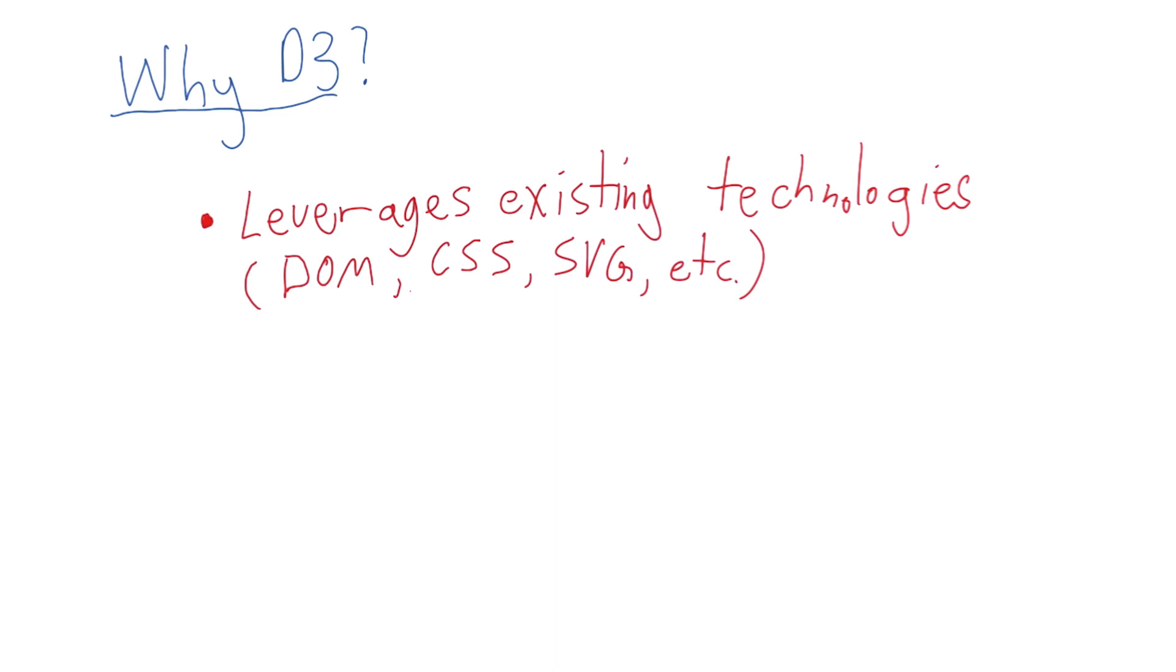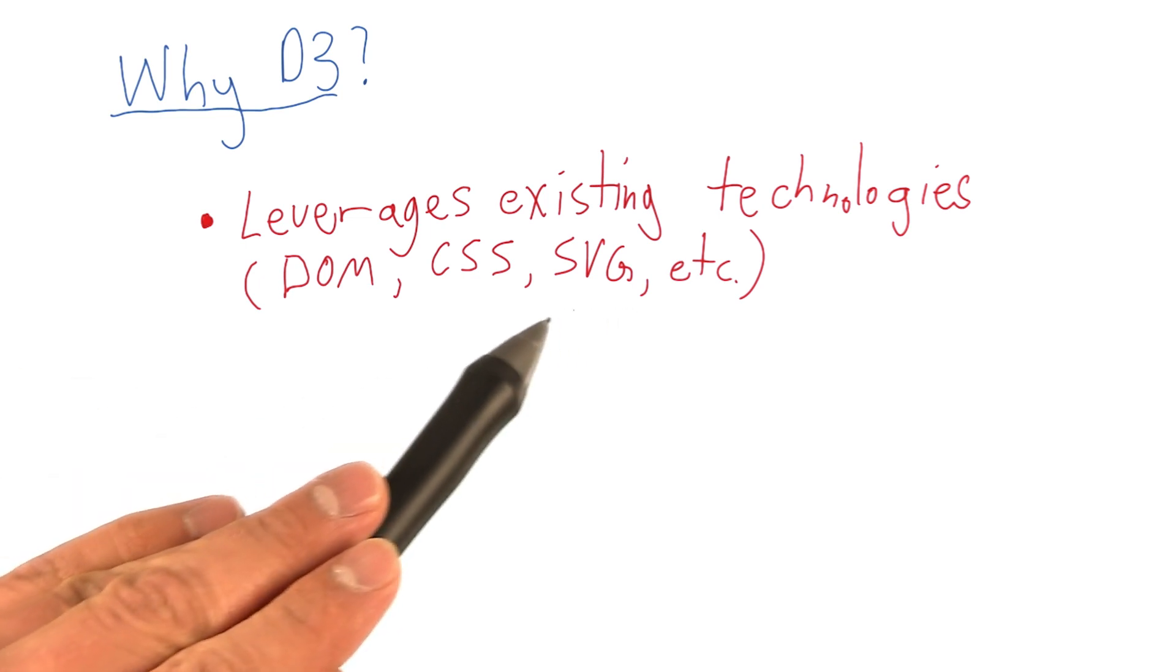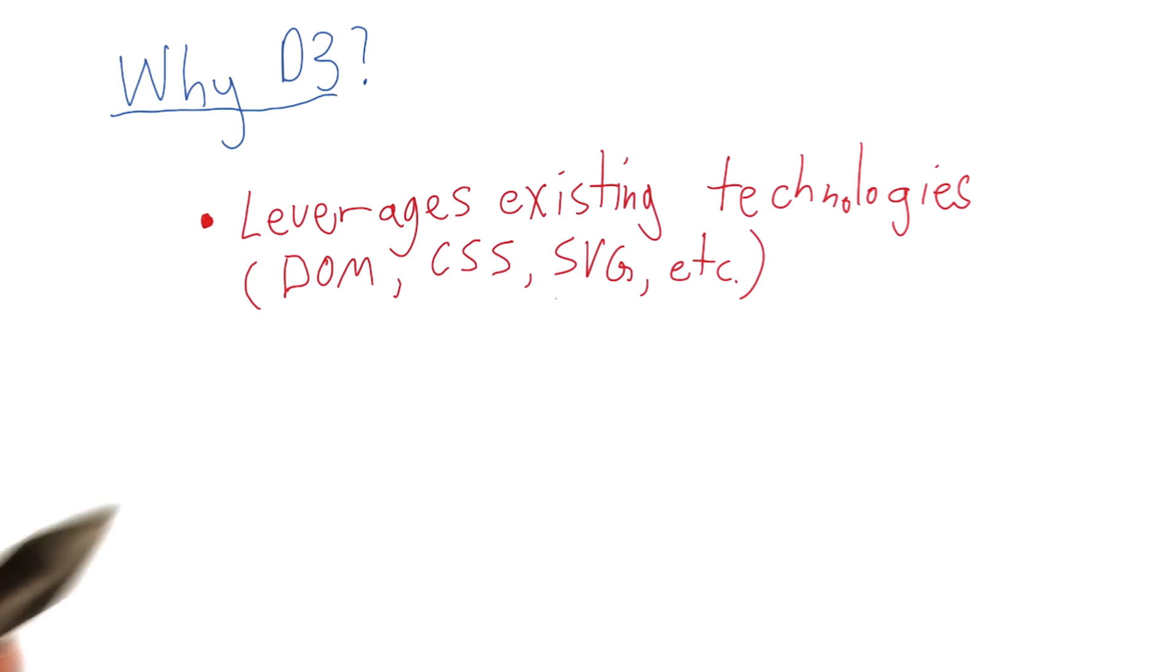Rather than obscure and hide the document object model, D3 embraces it by directly manipulating HTML nodes and SVG objects through common conventions like CSS selectors. By doing so, D3 has enabled much more expressive visualizations and allows designers to directly interact with developers by separating the style of a visualization from the mechanics of it.